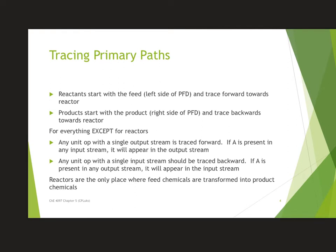The next topic they address is tracing primary paths. When you're looking for the materials that are in the feed, start with the left side of the diagram and trace forward. If you're trying to figure out where your products are, start with the right side and trace backwards. For everything except the reactor, if there's a single stream in, that material all has to come out somewhere, and if there's a single stream out, it all had to come in somewhere — basic material balance.